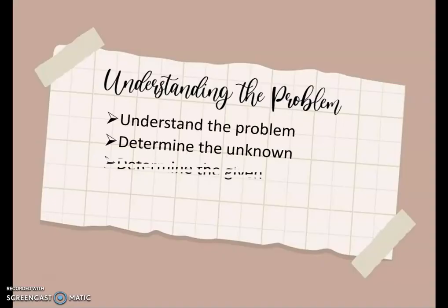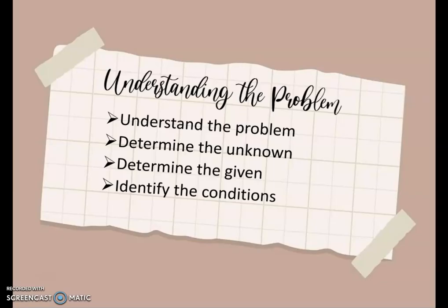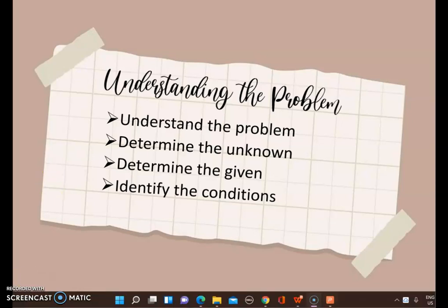In understanding a problem, you have to understand the problem, then determine the unknown — identify what we need to find — and determine the given. For example, convert $5 to pesos; the given is $5. Next, identify the conditions. So in understanding the problem, we have to look for and identify specific conditions.